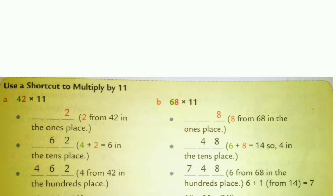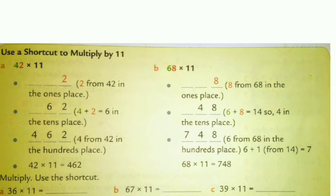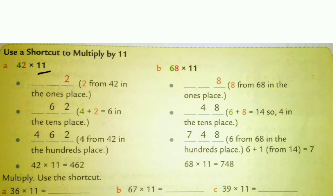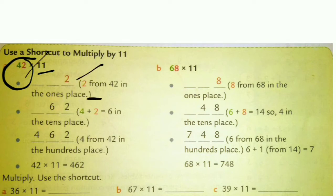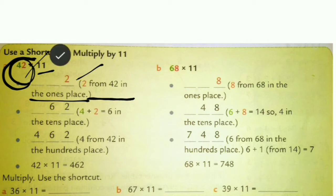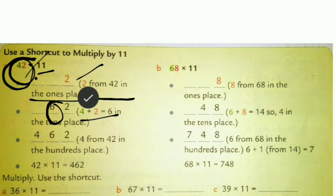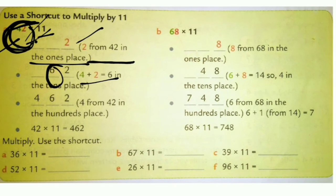Page number 83: use a shortcut to multiply by 11. It is very easy. Whatever number you multiply by 11, look at that same number — write the ones digit first (which is 2), then add the two digits together: 4 plus 2 equals 6.